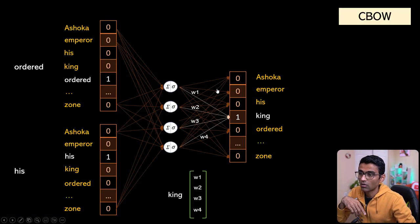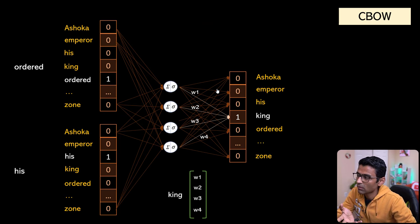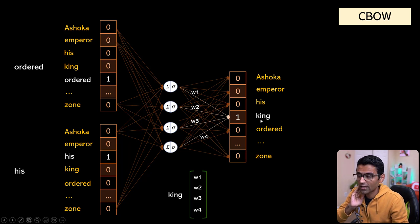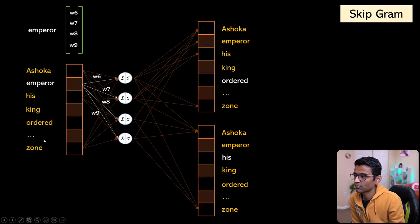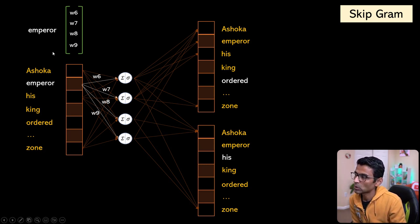In the Word2Vec video we covered two ways of creating word embeddings. One was Continuous Bag of Words (CBOW) and the other was Skip-gram. In CBOW you have a context and from that context you try to figure out the target word — for example, the context is 'order his' and you try to figure out the word 'king', training a neural network and using its weights as word embeddings. In Skip-gram, the reverse technique, you have a target word and try to predict the context, again obtaining word embeddings from weights w6, w7, w8, w9, and so on.